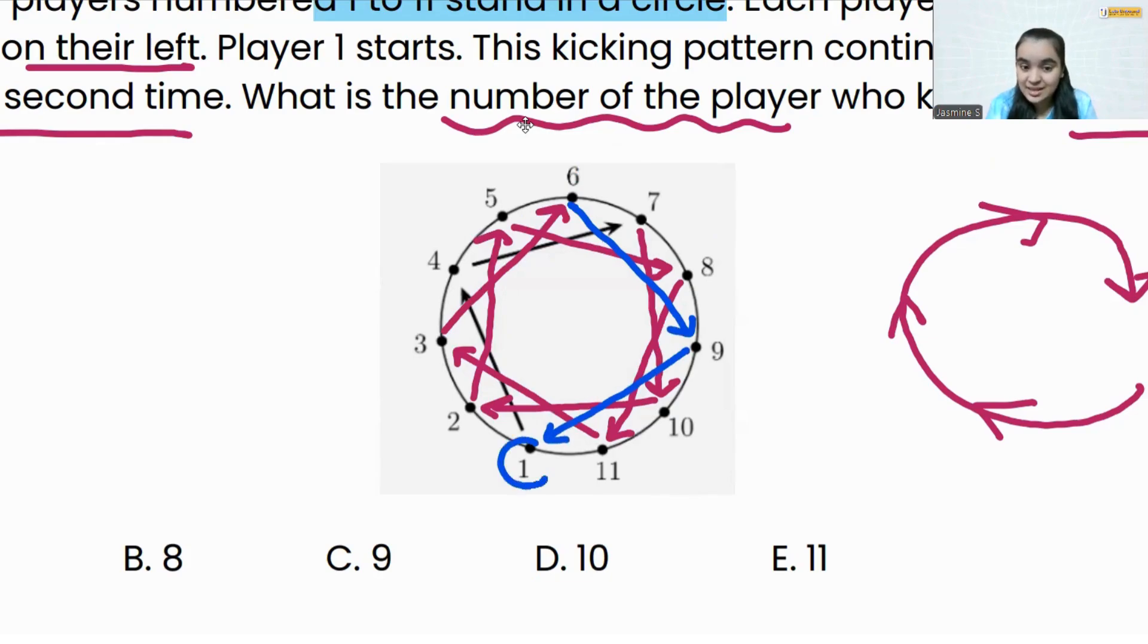And now if we see, 9 will kick to number 1, right? That is, again we are going to start with 1, same pattern. So who has kicked the last ball? Number 9 to 1, because from 1 again the same pattern will start. 1 is going to kick to 4, 4 will kick to 7, 7 will kick to 10, and so on.